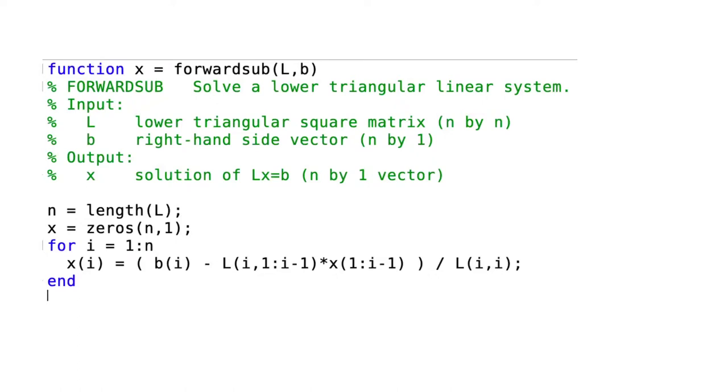So here's the code for doing forward substitution to solve a lower triangular linear system. In MATLAB every function has to start with the word function, and then after that come one or more output arguments, then the name of the function, and then you have one or more input arguments.